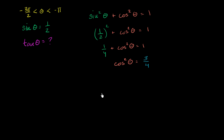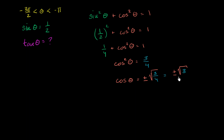So what could cosine of theta be? When we square it, we get positive 3 fourths, so it could be the positive or negative square root of 3 fourths — that is, the positive or negative square root of 3 over the square root of 4, which is 2. So cosine of theta is the positive or negative square root of 3 over 2. But how do we know which one it actually is? That's where the given range information becomes useful.